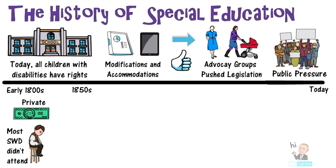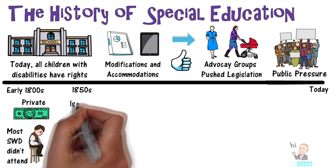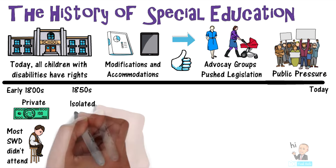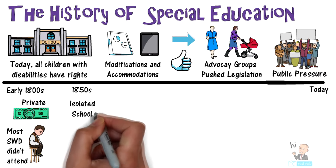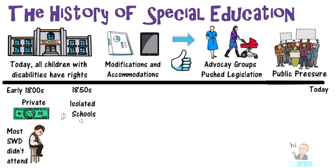Moving along to the 1850s, a growing number of isolated schools for students with disabilities were available. These schools were mostly in rural areas, but were moving in the right direction.